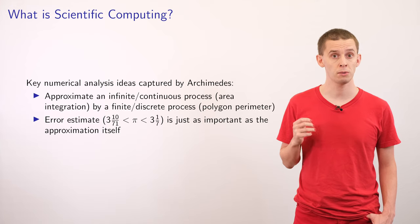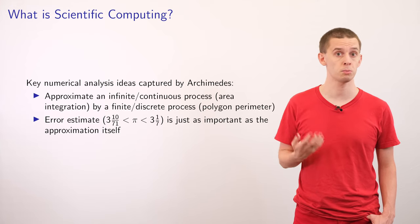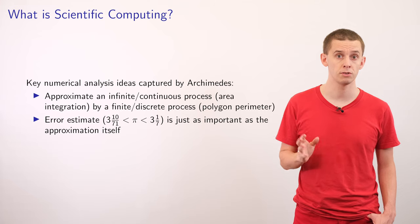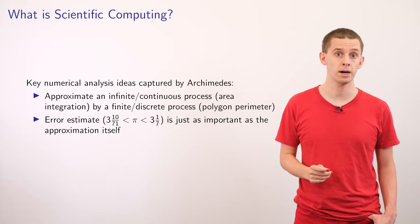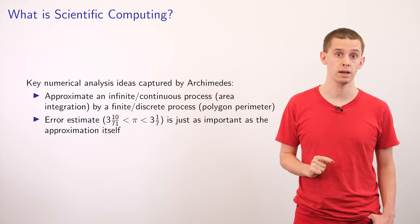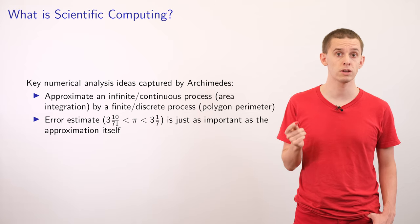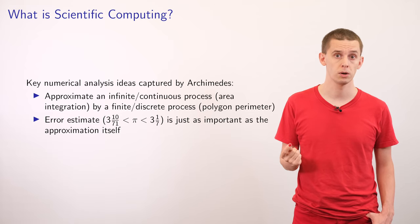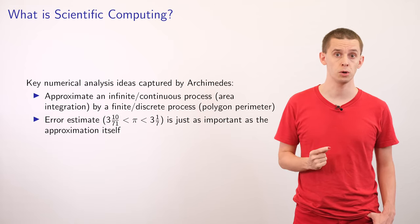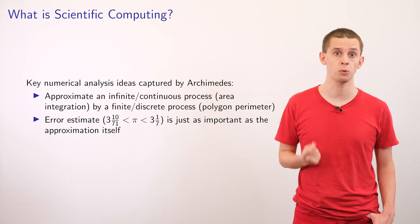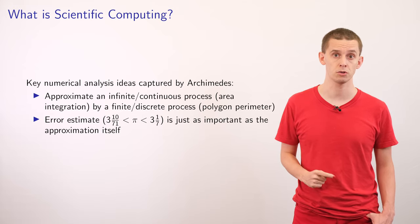Secondly, he was able to recognize that pi was not just approximately equal to something, he was able to actually give an exact bound on where it actually lied. This is a really crucial idea in modern scientific computing. We often really want to know about the error associated with a certain calculation, and we'll see that throughout many points in this course.